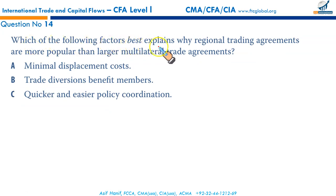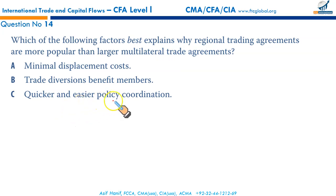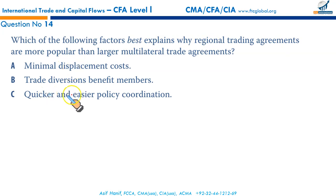Which factor best explains why regional trading agreements are more popular than larger multilateral trade agreements? Regional trading agreements are quicker to set up and allow easier policy coordination, rather than larger multilateral agreements that may take years of deliberations. Policy coordination and harmonization is much easier among a smaller group of countries — that makes C the correct option.